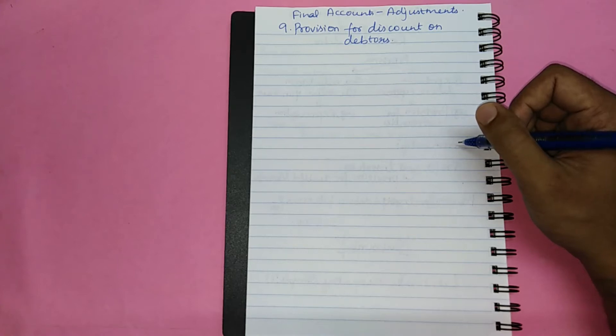Our current topic for discussion, provision for discount on debtors, comes under the first criteria, an amount set aside to cover a probable future expense. Here, the future expense is the estimated discounts which need to be allowed to debtors.